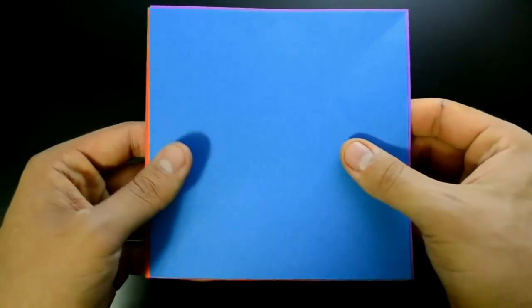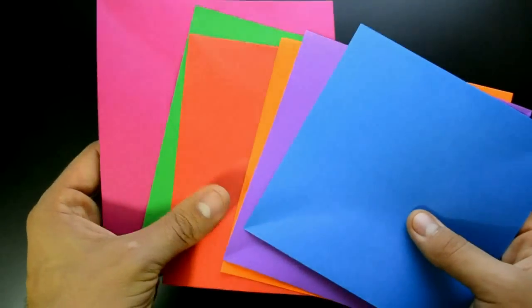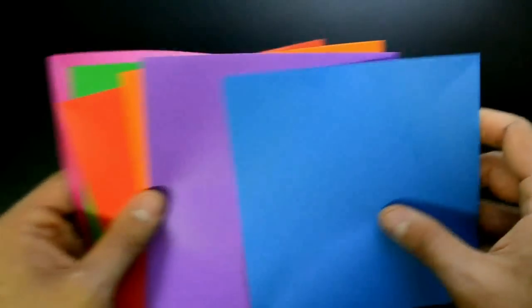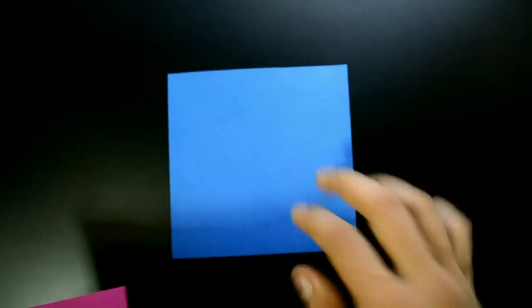I'll use six different colors, 15 by 15 centimeters. To start, take the first square and fold in half diagonally.